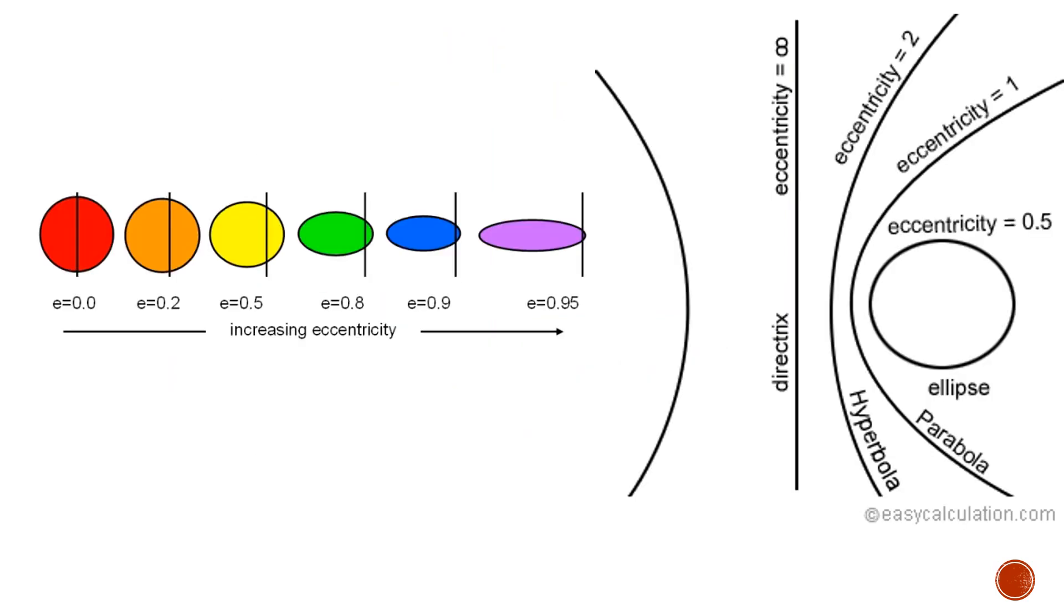Every conic section can be classified on the basis of its eccentricity, which is simply its deviation from circularity. Circles have eccentricity 0, ellipses have eccentricity less than 1, parabolas have eccentricity equal to 1, hyperbolas have eccentricity greater than 1, and straight lines have infinite eccentricity.